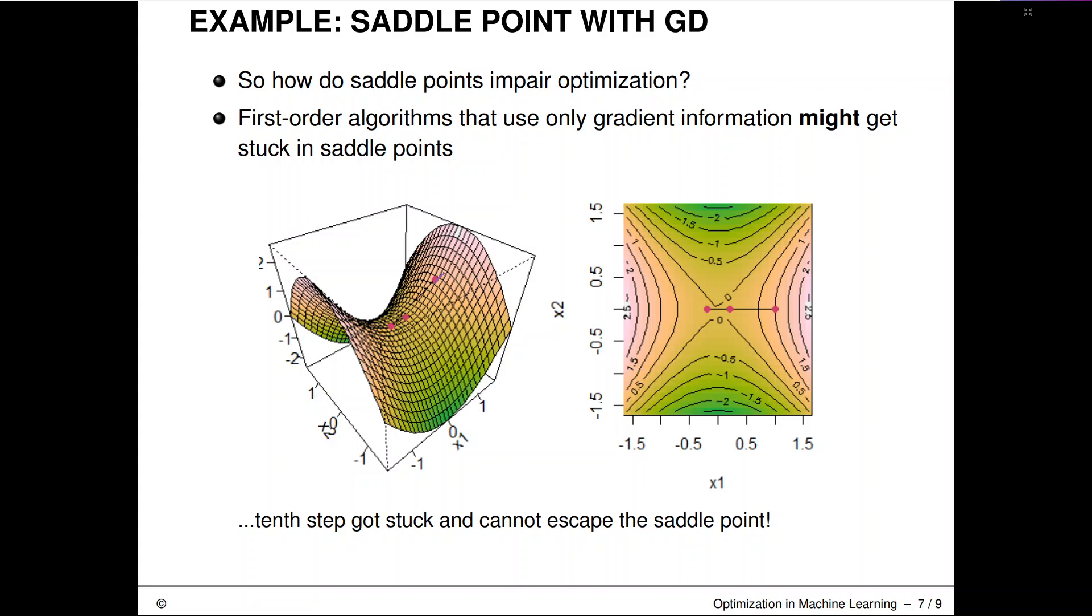We can get completely stuck in it and converge to that saddle point. But what can also happen in other instances is that we can potentially escape the saddle point, but we will have very slow crawling behavior. We crawl around the saddle point and maybe if we are lucky, we can get out of this.